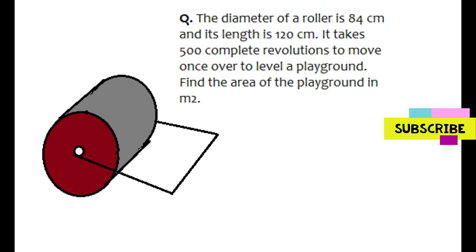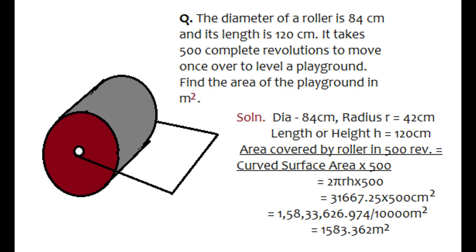The third question says the diameter of a roller is 84 centimeter and the length is 120 centimeter. It takes 500 complete revolutions to move once over and level a playground. We need to find the area of the playground. From the given data, diameter is 84 centimeter, so radius is 42 centimeter. The length of the roller can be taken as the height of the cylinder since the roller is cylinder-shaped, so height is 120 centimeter.